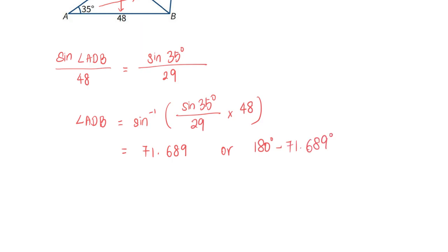This means that angle ADB can also be equal to 180 minus 71.689 degrees. I will have these two values, but this one I will have to reject this value for this particular question because this question has indicated that this is an obtuse angle.